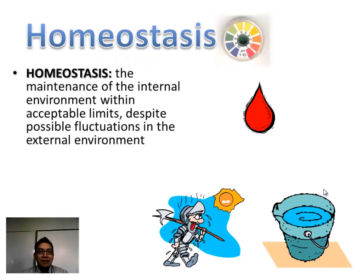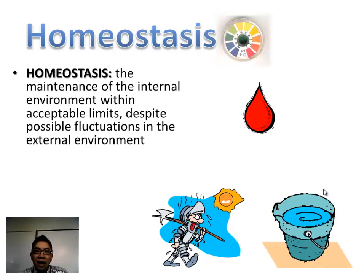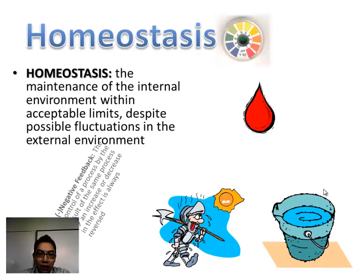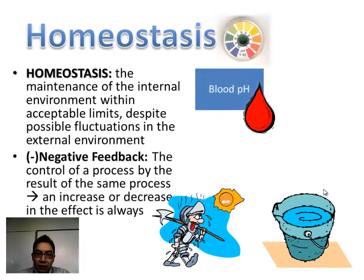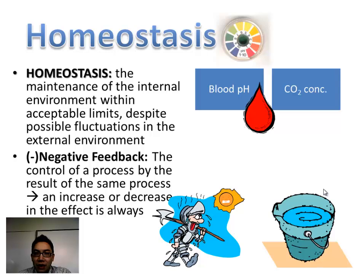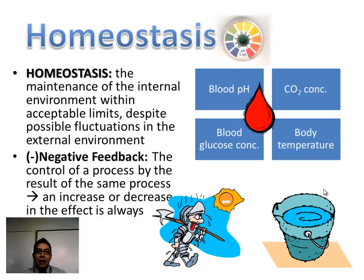Homeostasis is the maintenance of the internal environment within acceptable limits, despite possible fluctuations in the external environment. For example, it can be really hot outside, but inside our bodies we can still maintain a relatively constant temperature. Blood pH, carbon dioxide concentration, blood glucose concentration, and body temperature are four examples of things that our body tries to regulate.